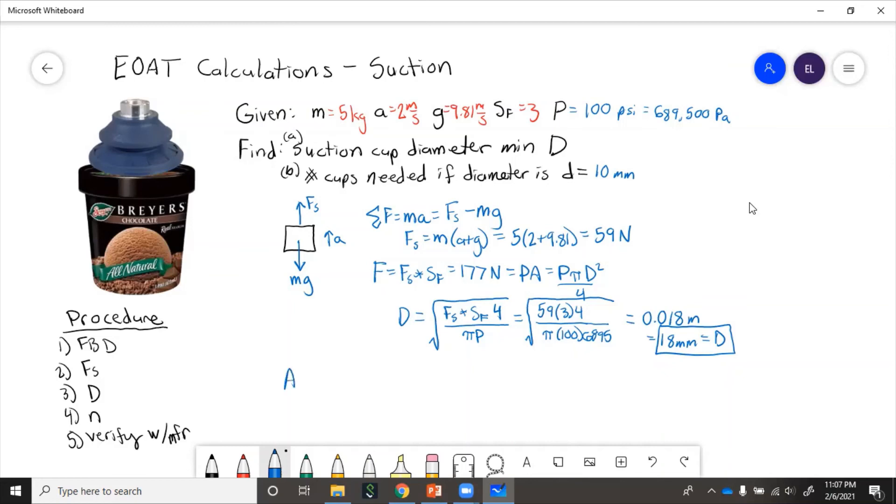So area equals pi d squared over 4, which equals n. Say n is number of suction cups times pi, the smaller diameter squared over 4. Well, this parts cancel.